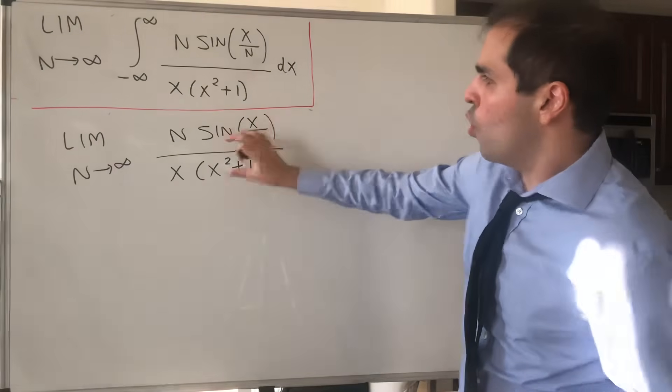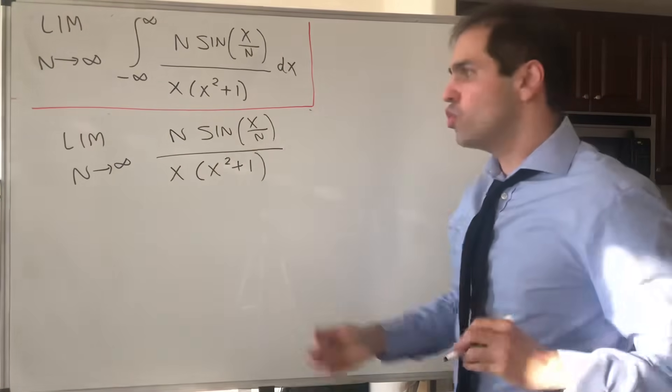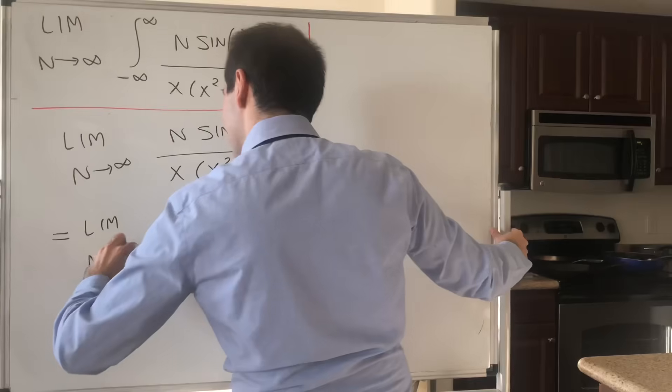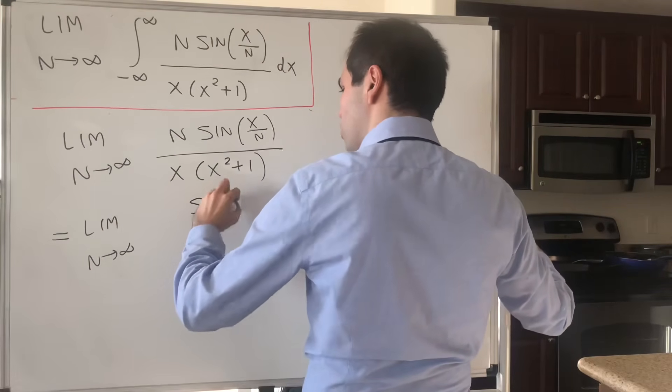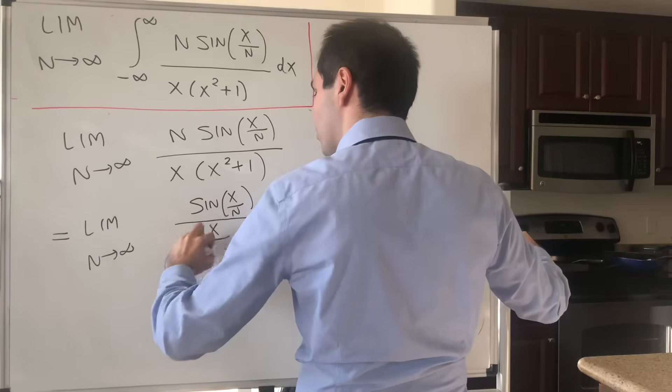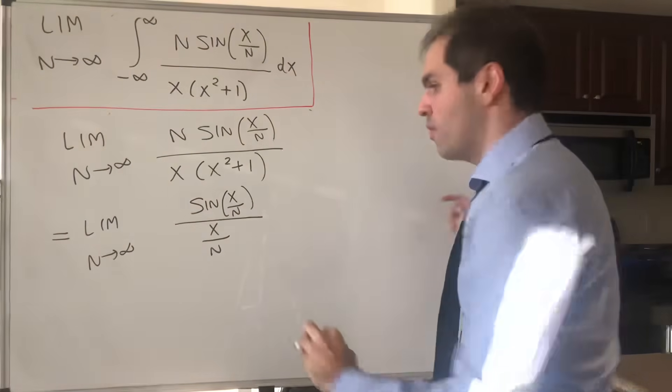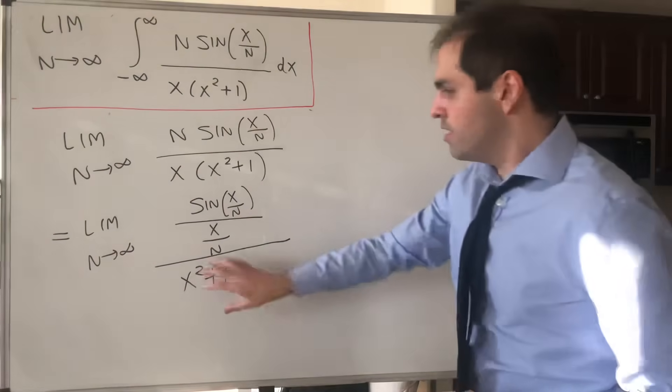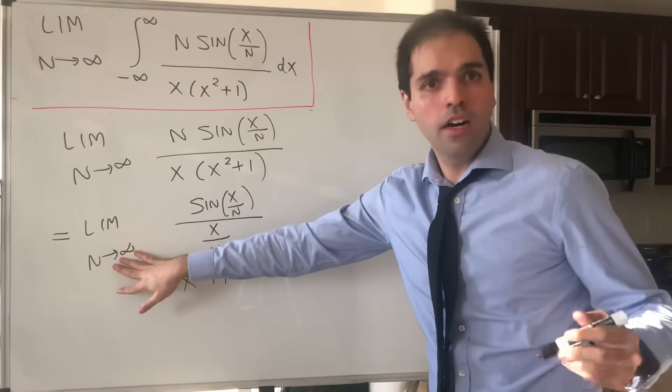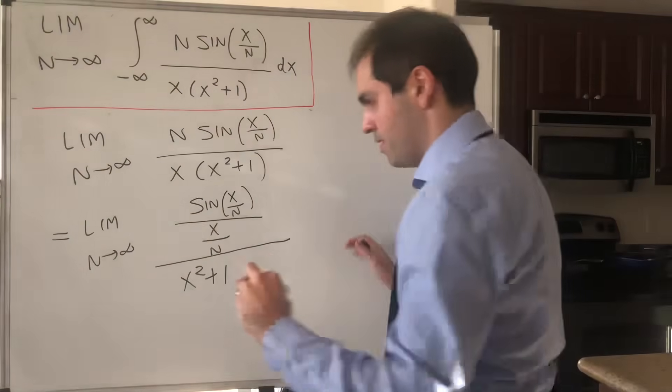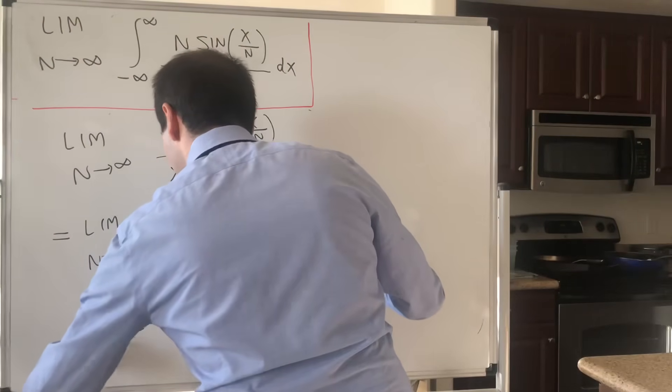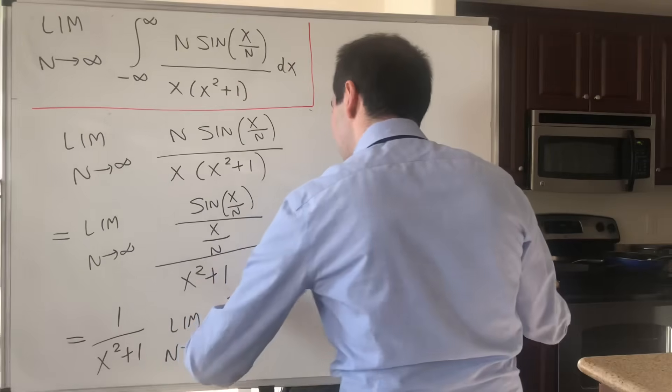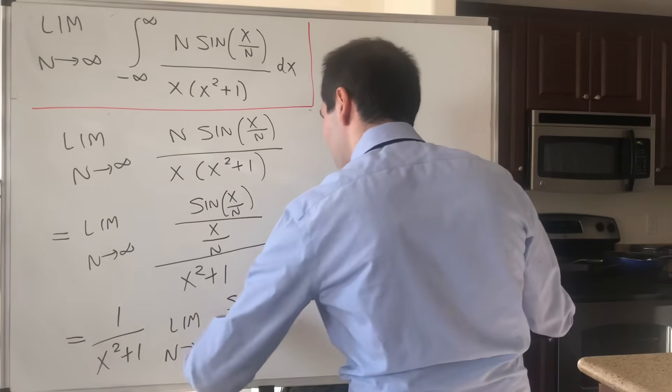Now, you see x over n and n over x, so how about we put both of those together? So limit n goes to infinity of sine of x over n divided by x over n, because n over x is 1 over x over n, divided by x squared plus 1. This 1 over x squared plus 1 comes out because it's independent of n. So that becomes 1 over x squared plus 1, limit n goes to infinity of sine of x over n over x over n.